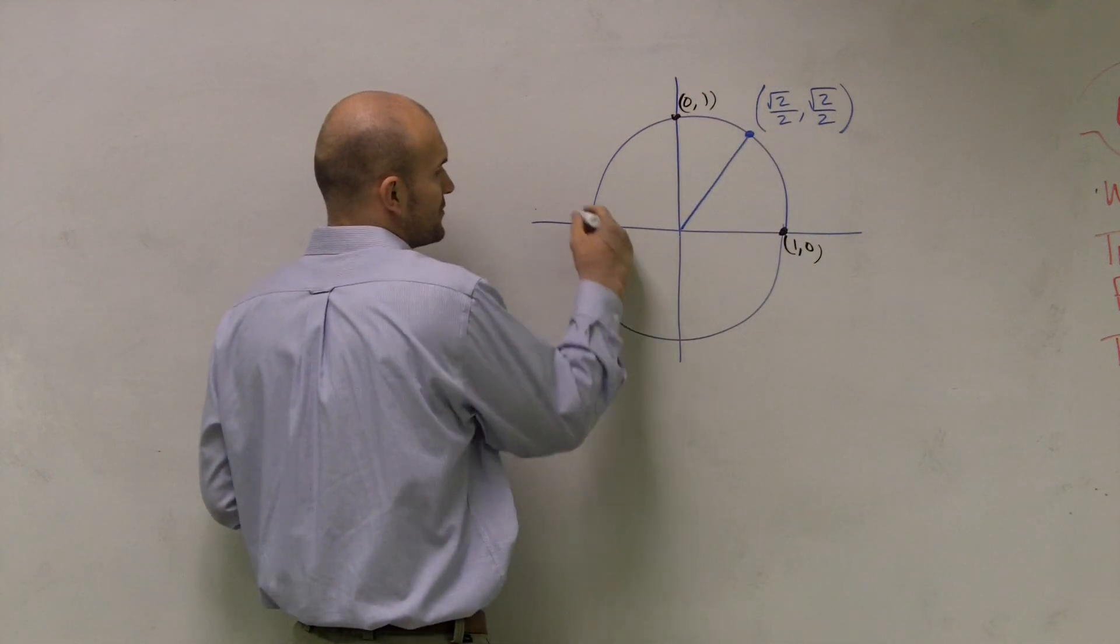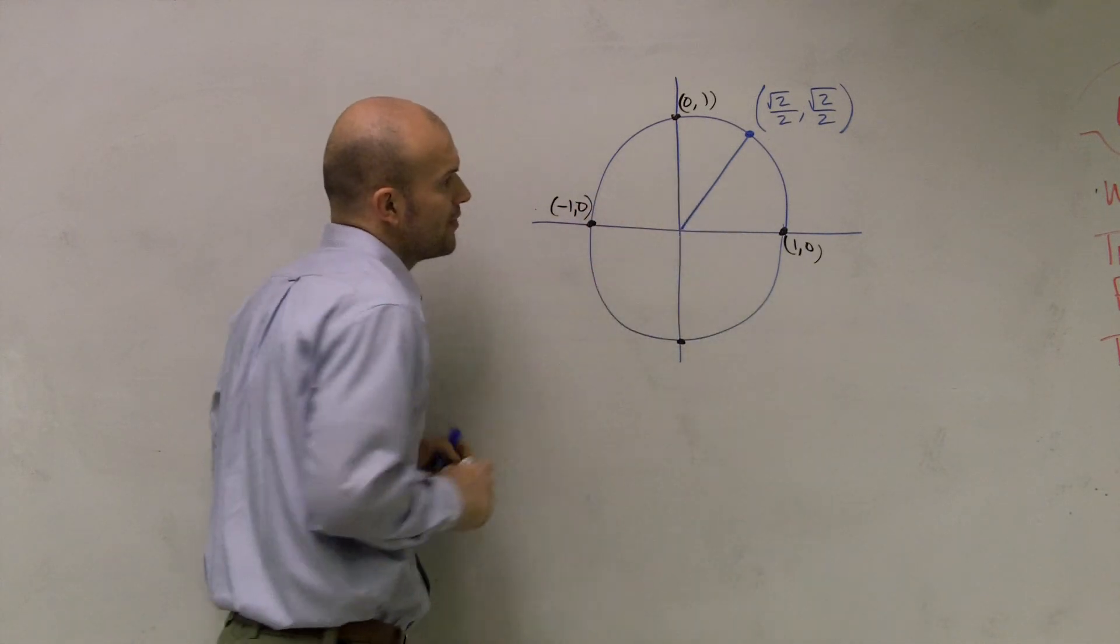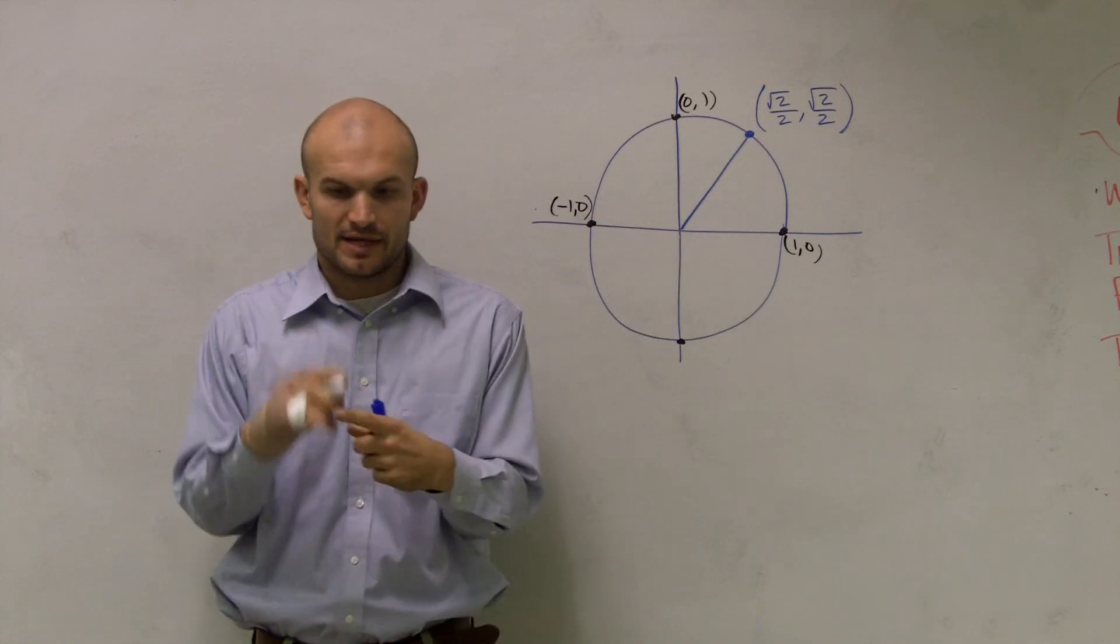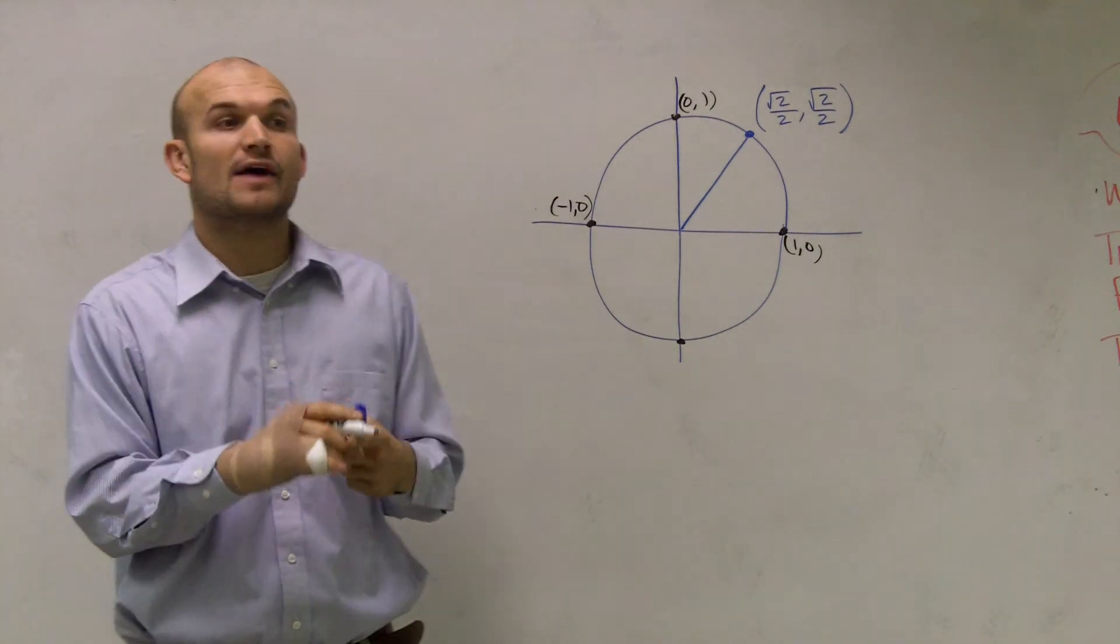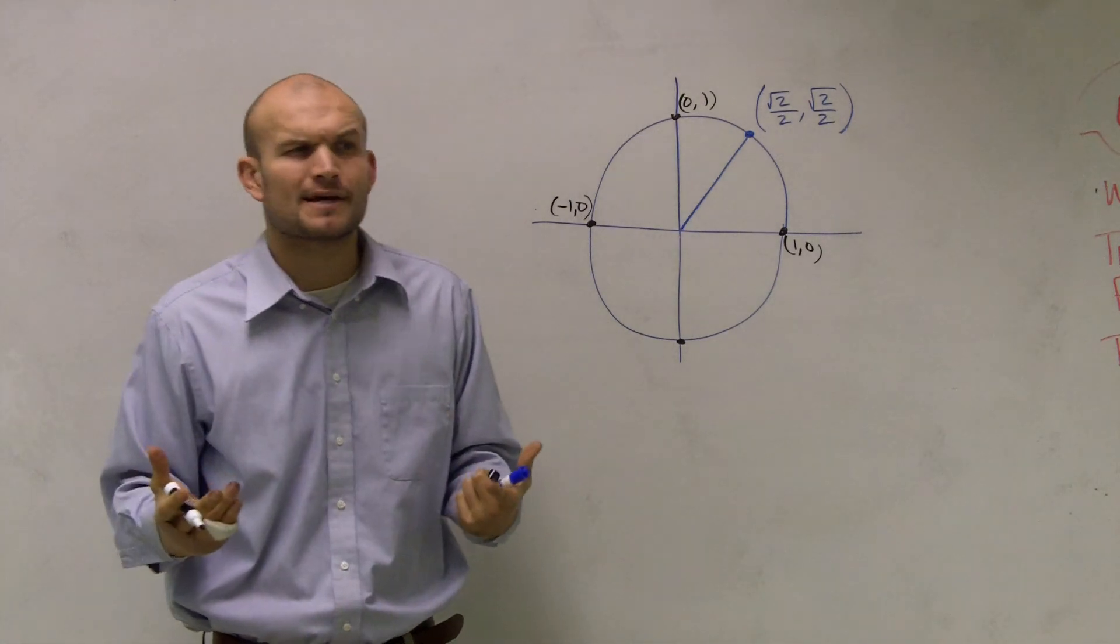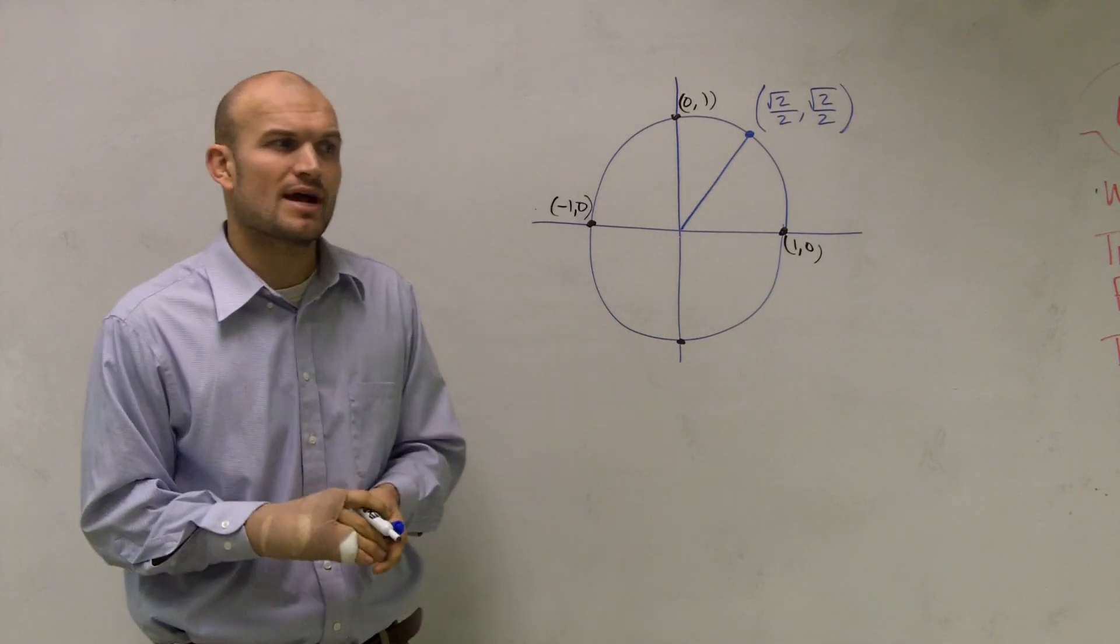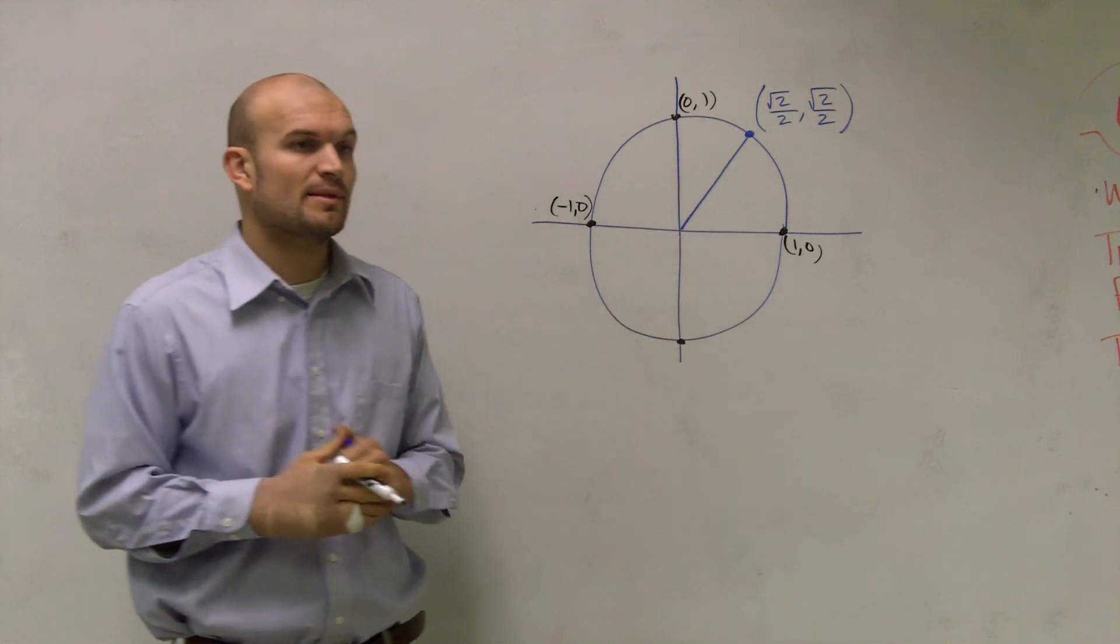I started going through the points and telling them there's certain points on there where we have like pi over 4, pi over 3, pi over 6, that we already know what those values are by using our special right triangles. The students were very confused. They couldn't remember what their special right triangles were for us to be able to determine the points on the line.